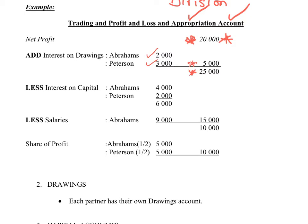The interest that we pay the investors on the capital they've put into the company is usually given to you as a percentage, and that percentage enables you to work out the dollar value. We see that Abrahams is going to be paid $4,000 as interest on his capital, and Peterson would be paid $2,000. One assumes that would be the division of the amount of capital they've invested — presumably Abrahams has invested $4 for every $2 that Peterson has invested. So Abrahams would get double the amount of interest on the capital put in, and that's fair: if you put in more money, you should be rewarded with more interest.